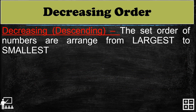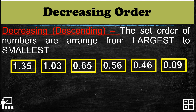Next, decreasing or descending order — this is a set of numbers arranged from largest to smallest. We start from the largest number down to the smallest. So I have here: 1 and 35 hundredths, 1 and 3 hundredths, 65 hundredths, 56 hundredths, 46 hundredths, and 9 hundredths. The numbers are arranged from largest to smallest — that is the decreasing or descending order.